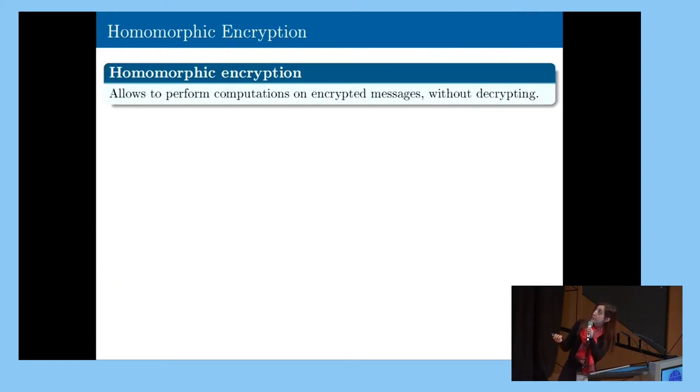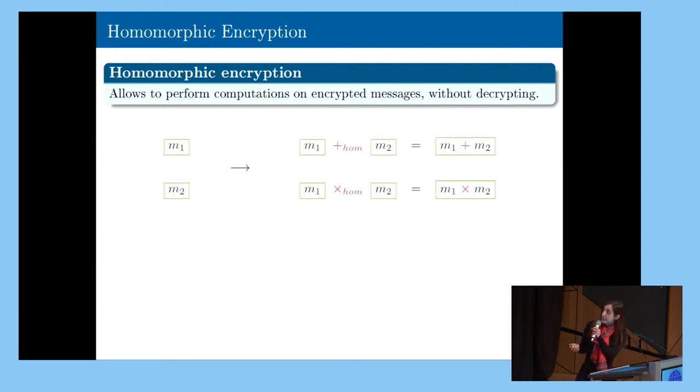So since we're talking about homomorphic encryption, what is homomorphic encryption? It's a family of encryption schemes that allows us to perform computation on encrypted messages without needing to decrypt or to know any secret. In the general case, imagine that we have two messages encrypted. In this slide, the encryption is represented by the green box.